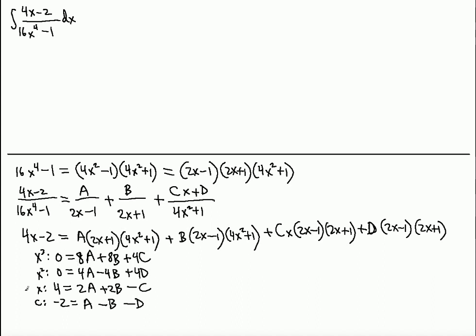If we multiply the constant equation by 4, we get 8A and 8B — which already appear in the x³ equation. So we subtract the first equation from the third (third minus first): 16 - 0 = 16 on the left, 8A - 8A = 0, 8B - 8B = 0, and -4C - 4C = -8C. So C = -2.